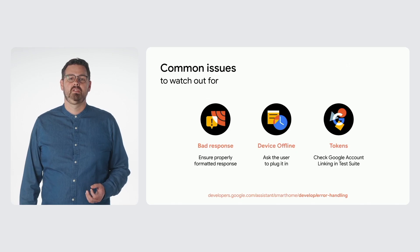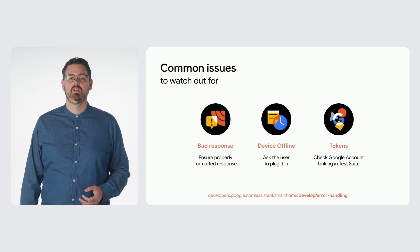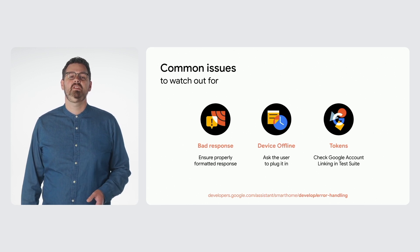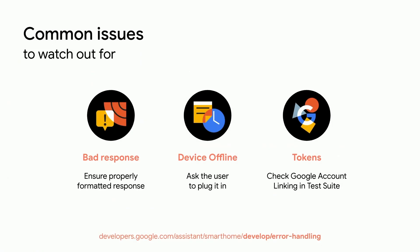There are several common issues to watch out for. First, a bad response — did you send a valid success response that includes the device state? If you sent an error, was it properly formatted using an error code defined in the documentation? For device offline, maybe the light switch was off or your device didn't have power — is this something your server or app can detect and alert the user to? With tokens, do you support multiple Google users connecting to a single account on your side? You should. Try out the new token validation tool within the Google Home test suite. We also have new error documentation that covers proper error handling — please make sure to take a look at that for more details.